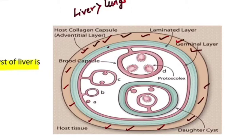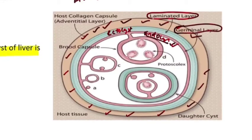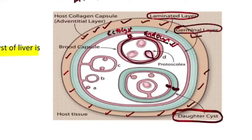The layer inside the pericyst is known as the ectocyst — this is the parasite layer. The innermost layer is the endocyst. The ectocyst is known as the laminated layer and the endocyst is known as the germinal layer. The endocyst is the most important layer because it gives rise to all the brood capsules, and the protoscolices originate from these brood capsules. When these brood capsules develop their own endocyst and ectocyst, they are known as the daughter cysts.